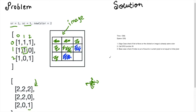We need a base case to stop our recursion. If we go out of bounds — say I'm looking up and there's nothing above me — we stop and return to the call stack. We need to check if our index is out of bounds, or if the current pixel is not equal to our initial pixel. If we're at a blue position, we return, because we only want to color white cells green. We also check an edge case: if the cell is already green, we just return the image.